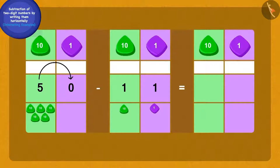We will borrow one ten from five tens of fifty and thus make ten ones. Because we borrowed one ten, we have four tens left now.